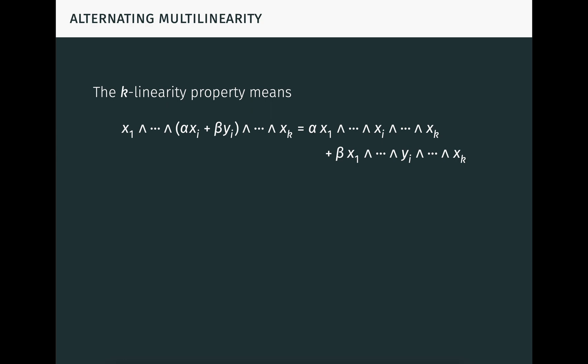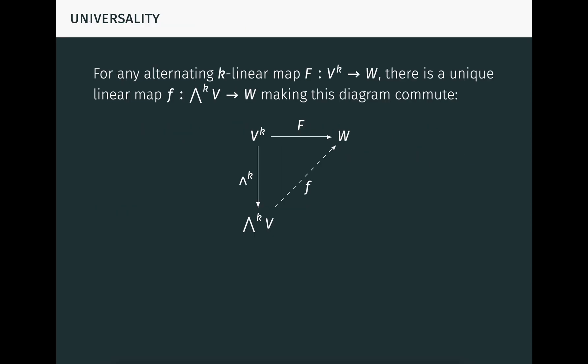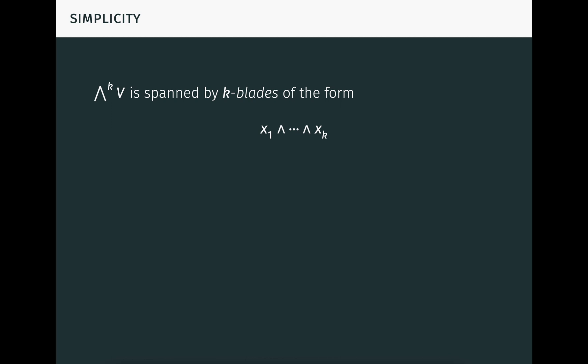The k-linearity property of the exterior product means that it's linear in each factor when the other factors are held fixed. We're writing the exterior product using infix notation, with the wedges between the vectors. The alternating property means that the product is 0 whenever two vectors are equal. The universal property means that for any alternating k-linear map F on v into any vector space w, there's a unique linear map f from wedge k v into w, making this diagram commute. This tells us that any alternating multilinear map can be obtained through an exterior product in a unique way, which is why the exterior product is said to be universal. It follows from the universal property that the exterior power wedge k v is spanned by k-blades — that is, simple or decomposable k-vectors of the form x1 wedged through xk.